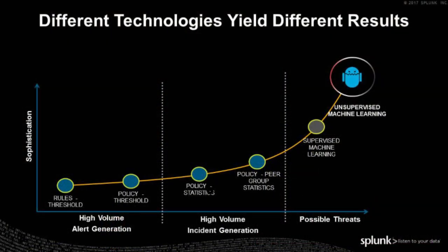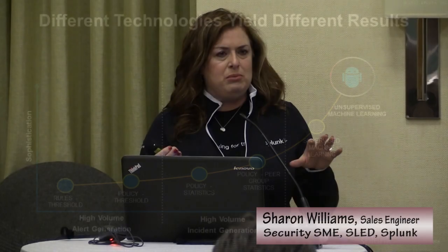When we talk about behavioral analytics, there's an entire spectrum and continuum on which that technology exists. At the lower level are finite, black-and-white rules — for example, show me every time any user downloads data in excess of 100 gigs, or show me any time a user is logged in on one account in two different sessions. These are really finite, definable types of rules that can be used in your existing SIM and handled by your tier one personnel.